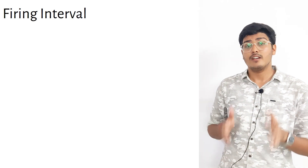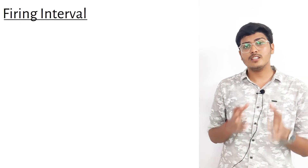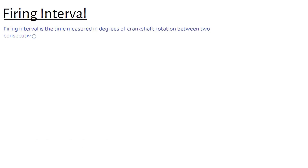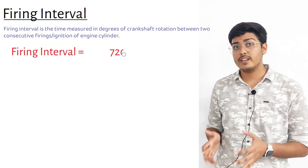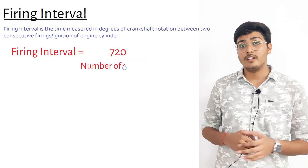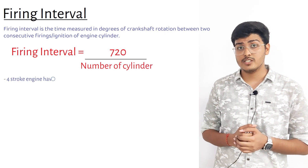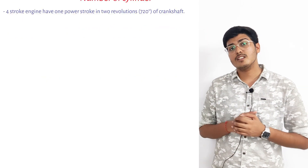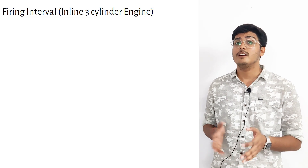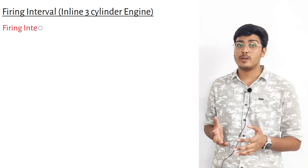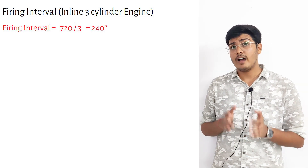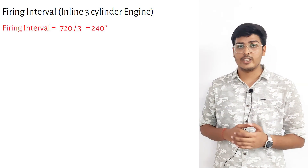Other than primary and secondary forces, firing interval also affects the smoothness of a running engine. The firing interval is the time measured in degrees of crankshaft rotation between two consecutive firings or ignitions of engine cylinders. It can be calculated as 720 divided by the number of cylinders. We use 720 because in a four-stroke engine there is one power stroke in two revolutions of the crankshaft. For an inline three-cylinder engine, the firing interval is 720 ÷ 3 = 240°, meaning it fires after every 240° of crankshaft rotation.